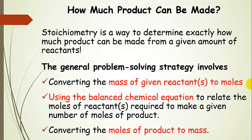Our general problem-solving strategy will always involve, first, converting the mass of any given reactants to moles — moles are the bridge from the macroscopic world of measured mass to the microscopic world of atoms and molecules. Next, we use the balanced chemical equation to relate the moles of reactants required to make a given number of moles of product. Finally, we convert the moles of product to mass. So it's always: mass to moles, use the balanced equation, then moles of product to mass.